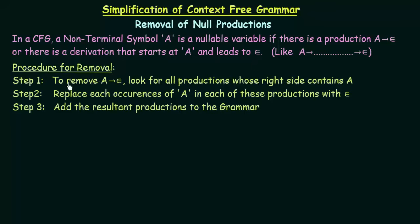Now let us see the procedure we have to follow for removal. In step 1, to remove A gives epsilon, look for all productions whose right side contains A. In step 2, replace each occurrence of A in each of those productions with epsilon. In step 3, add the resultant productions to the grammar. Now let us see an example to understand this in a better way.